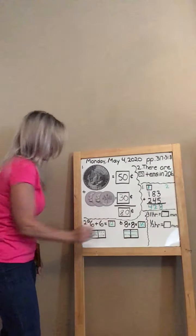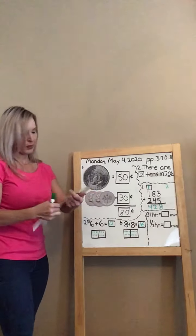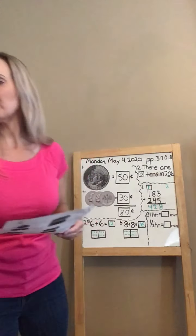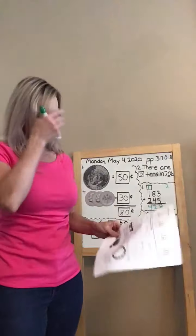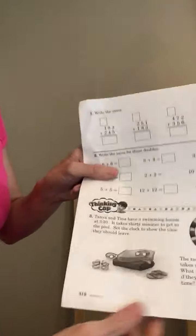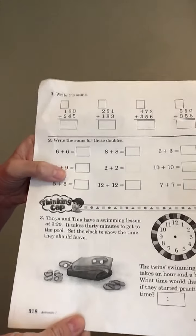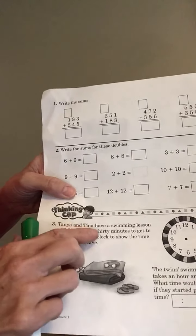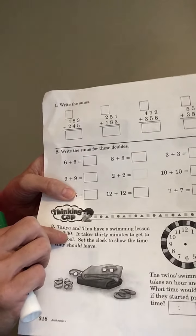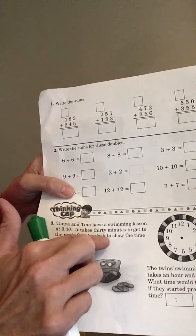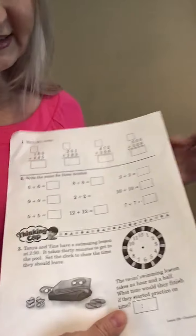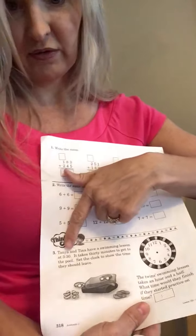Finally, number three on page 318 is a thinking-cap question. Read along with me: Tanya and Tina have a swimming lesson at 3:30. It takes 30 minutes to get to the pool. Set the clock to show the time they should leave. Their lesson is at 3:30, so let's first set our clock for 3:30.